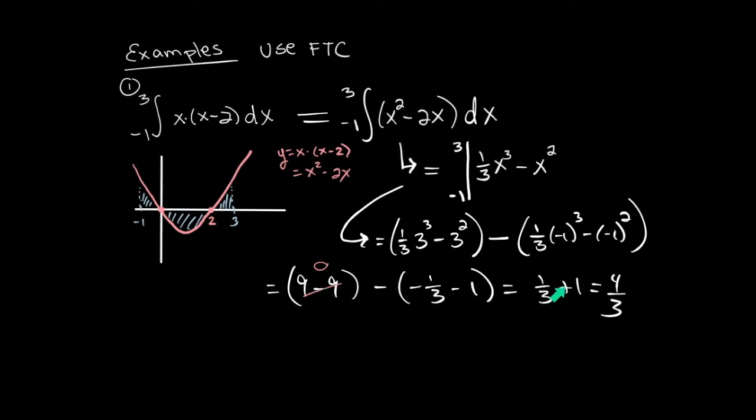If adding this stuff up went too fast for you, go back, pause it, check it, do it yourself, and challenge yourself to understand every single little part of every single problem. So at the end of the day, we found the net area on the graph of this parabola to be 4 thirds. Turns out there's more area above the x axis than below. You can see my picture's a little off, but that's okay.